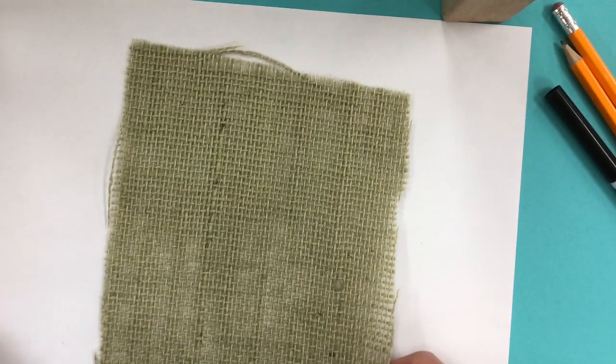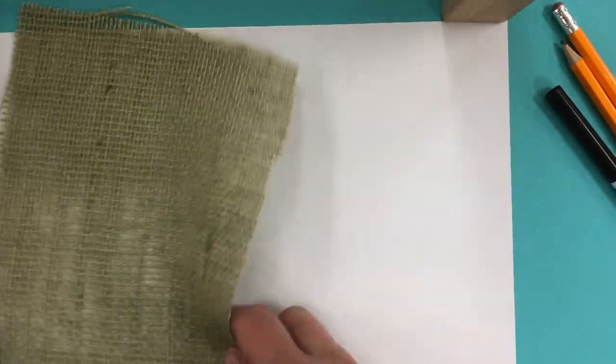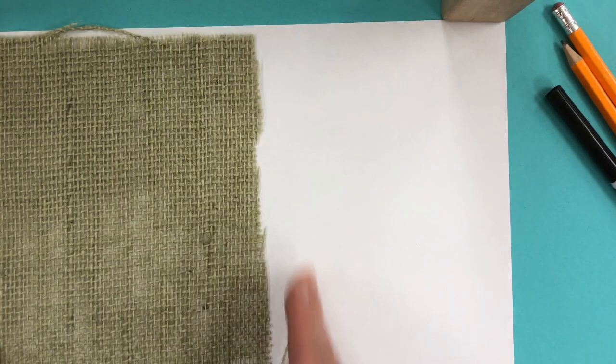So the first thing you're going to do is lay your paper down sideways, wideways landscape, and notice that your fabric is probably close to about half of the size of a piece of paper.